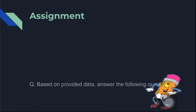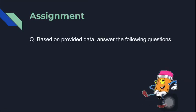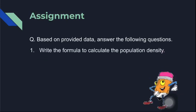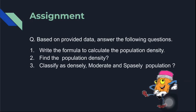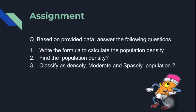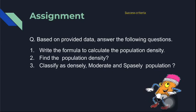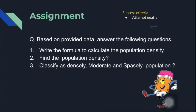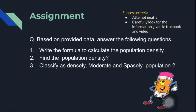Your assignment to attempt in your notebook: question number one, based on the provided data, answer the following questions — write the formula to calculate population density, find the population density, and classify as densely, moderate, or sparsely populated. Your success criteria: attempt neatly and carefully, look for the information given in your textbook, and send your summary questions.